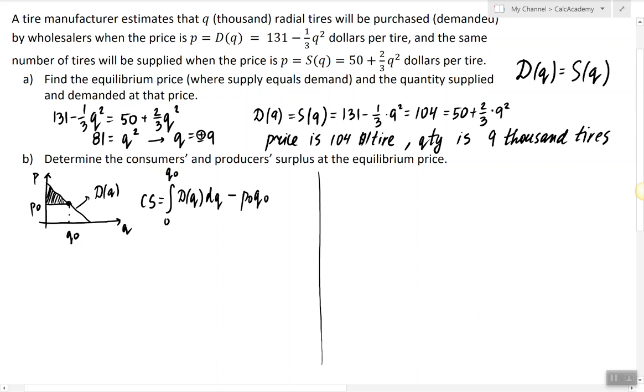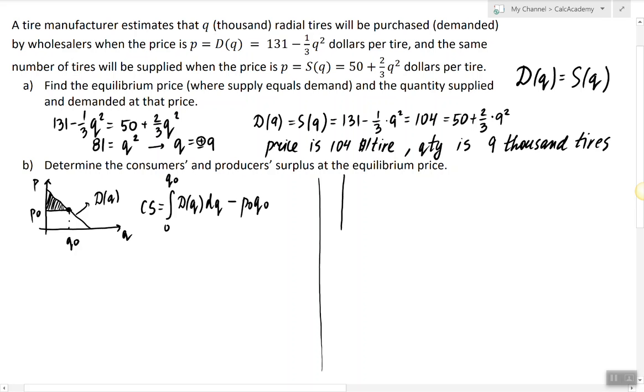Now for producer surplus we would have to consider the supply curve. And at a certain price level the producer surplus is defined by this area. So this area can be found by finding the integral, or by actually first finding the area of the rectangle which is p0 times q0 and then taking away the area under the supply curve which is the integral from 0 to q0 of S(q) dq.